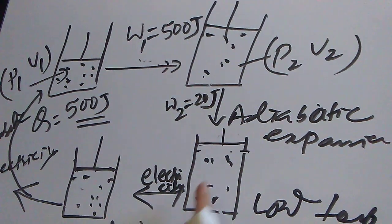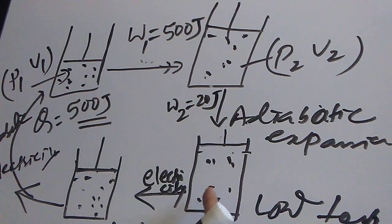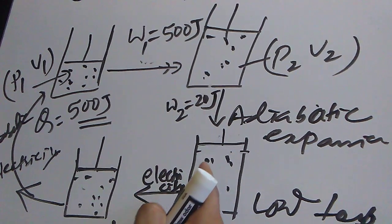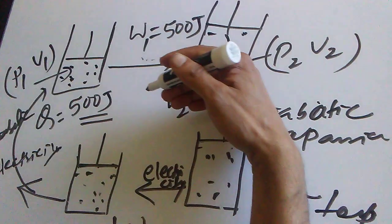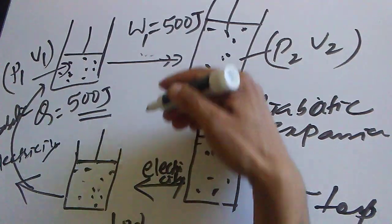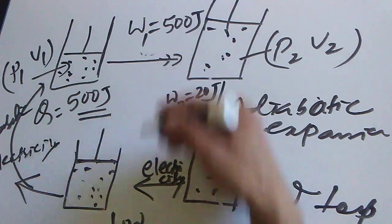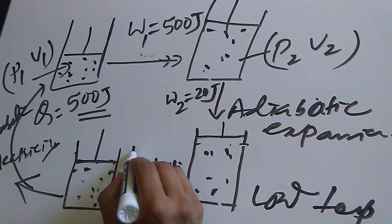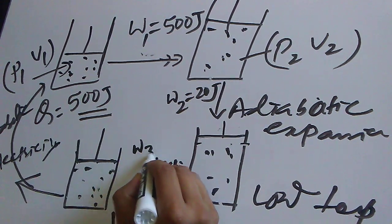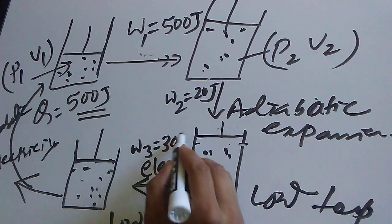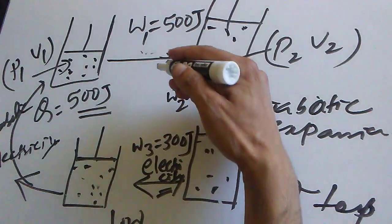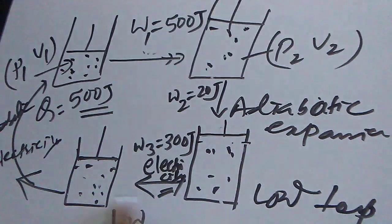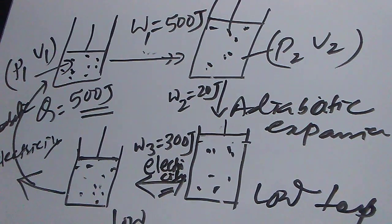How much electricity did we use going from the adiabatic expansion state to the next state? We applied electricity to compress the piston down. Let's say we used 300 joules of electricity to compress the gas isothermally from that state to the next state.